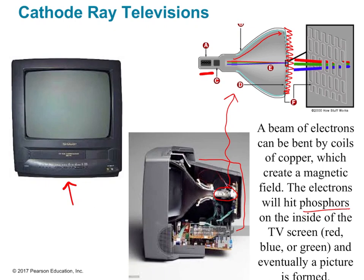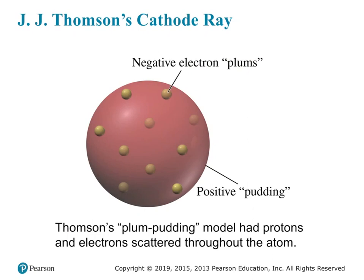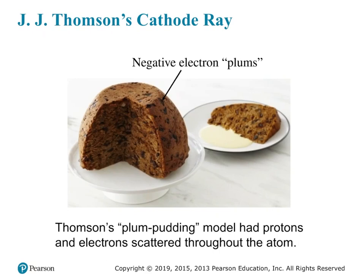Sometimes you'd notice a little wiggle in the screen that would travel down — that was probably because things were out of sync or something was broken in the back of the TV. Here's the plum pudding model that J.J. Thomson proposed. He thought there was a positive pudding-like substance with negative electrons just floating around in it. He called it the plum pudding model because it resembles plum pudding, with plums scattered throughout — that's what he was picturing for an atom.